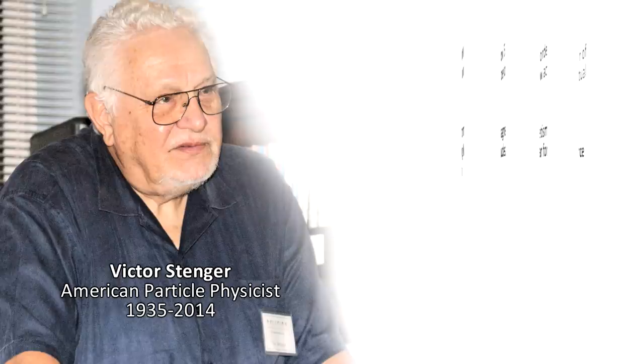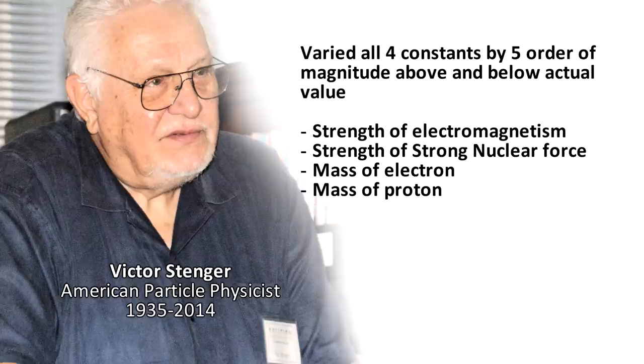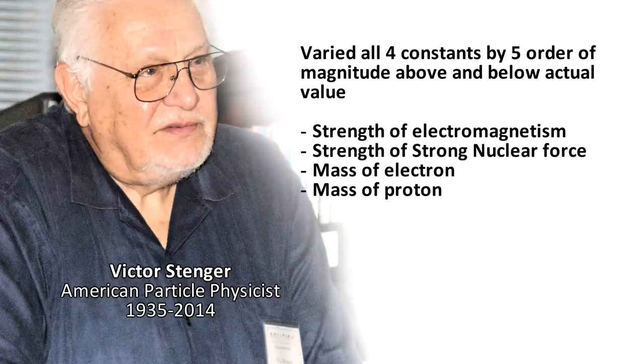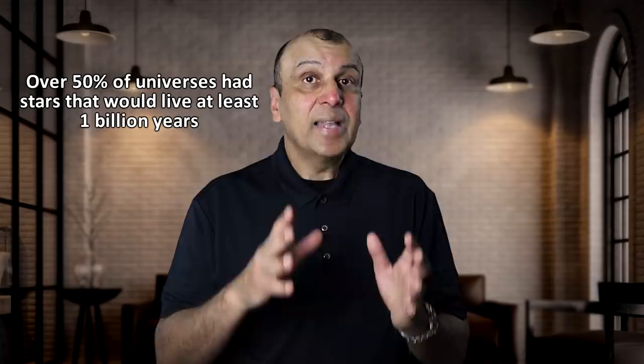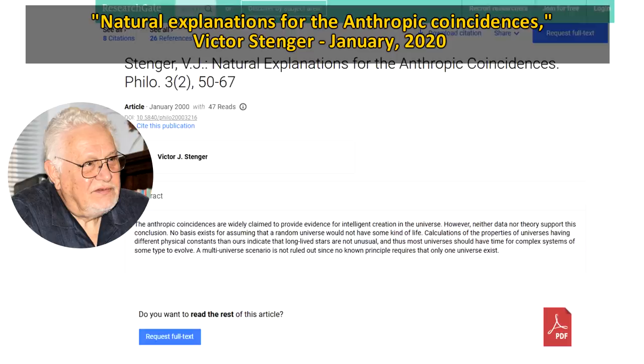Taking this information, physicist Victor Stenger did a study in 2000 where he varied these four constants to see what the potential universes would look like. He analyzed 100 universes, in which he randomly varied the constants by five orders of magnitude above and five orders of magnitude below their actual values in our universe. What he found was that over half the universes would have stars that live at least a billion years. This would be enough time for large atoms and complex chemistry to occur. Although a long stellar lifetime is not the only requirement for life, his studies showed that this very important parameter is not an unusual property for a rather random universe to have.